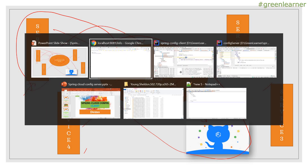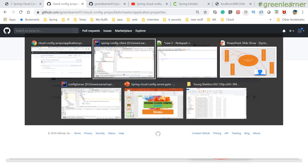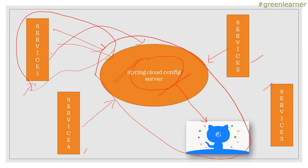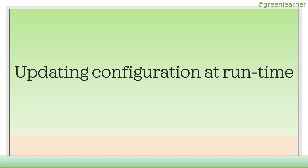The next requirement is loading profile-specific properties. In your application you have different profiles — sometimes you are in test phase, sometimes in production — and you want configuration specific to that profile. We have seen default configuration, and next we will cover profile-specific configurations and updating configuration at runtime. These two topics will be covered in the next video, so play around with this and connect a config client to the config server. See you in the next video — take care, bye!